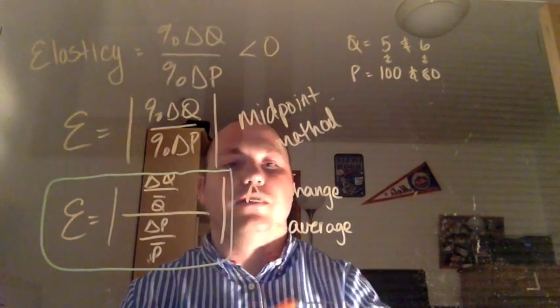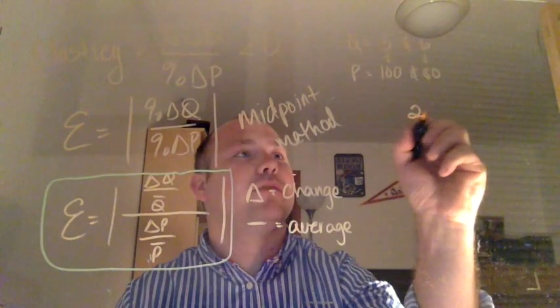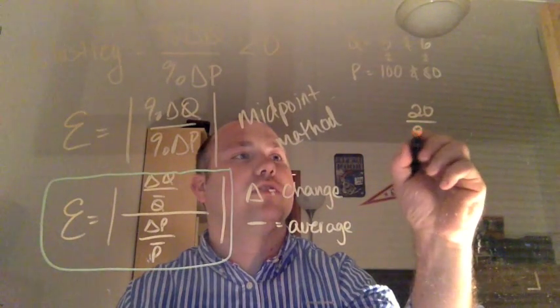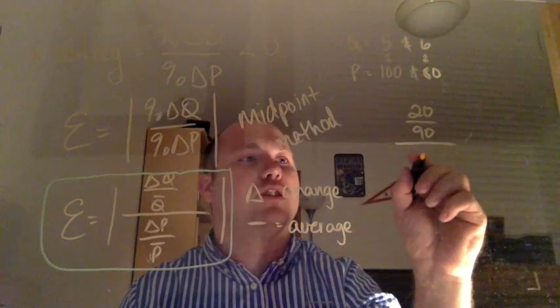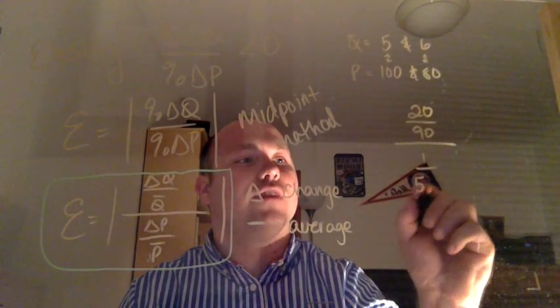So let's find the top part, the change in the quantity. The quantity is going to be 20. The average of those is 90. Divided by the change in the top two, the change is 1. The average is 5.5.